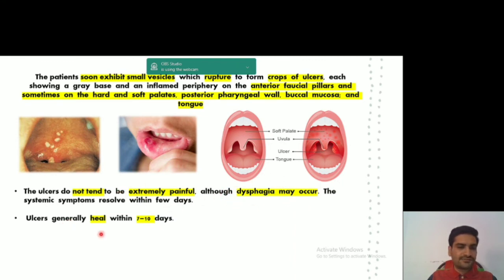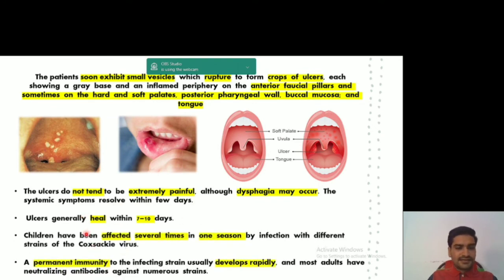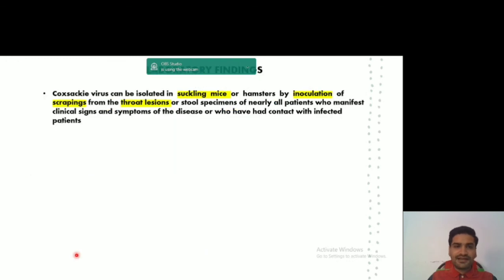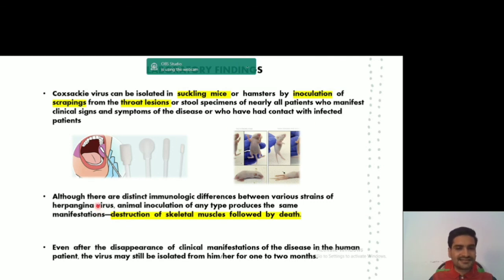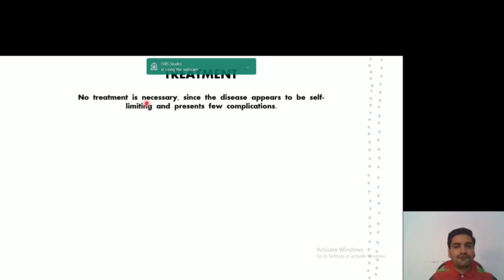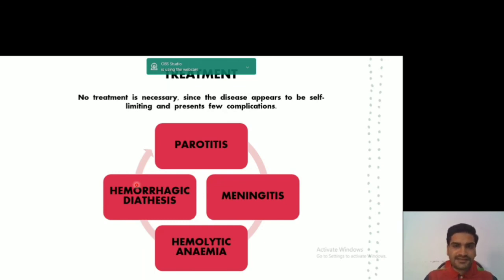Vesicles rupture to form ulcers primarily on the anterior faucial pillars, along with hard palate, soft palate, posterior pharyngeal wall, buccal mucosa, and tongue. These ulcers are not painful but may cause difficulty in swallowing, and healing occurs in 7 to 10 days. Children can be affected multiple times, but immunity develops rapidly with age. Coxsackievirus can be isolated by scraping lesions and inoculating into mice, showing destruction of skeletal muscles and death. No treatment is required, but complications include parotitis, meningitis, hemolytic anemia, and hemorrhagic diathesis.